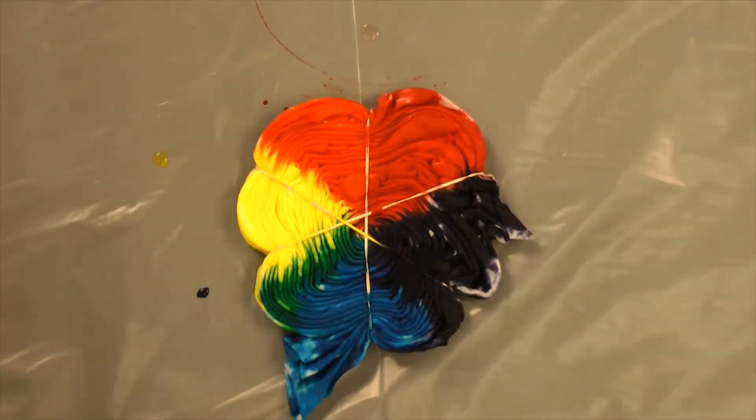And there's the rainbow spiral. Now it needs to sit for about 24 hours before we can wash it out.